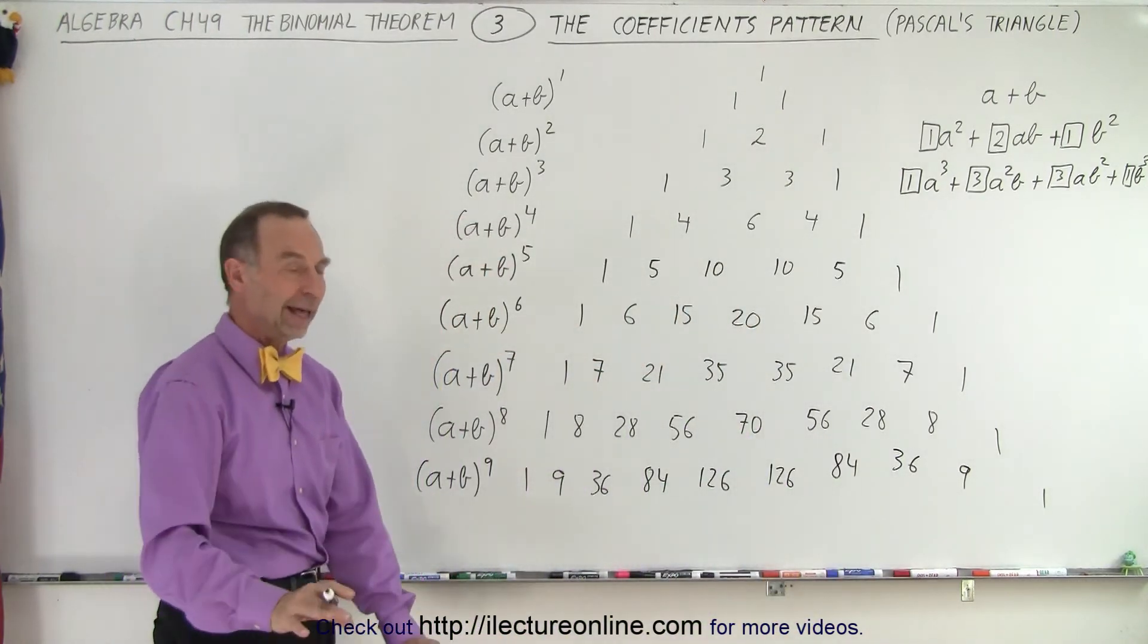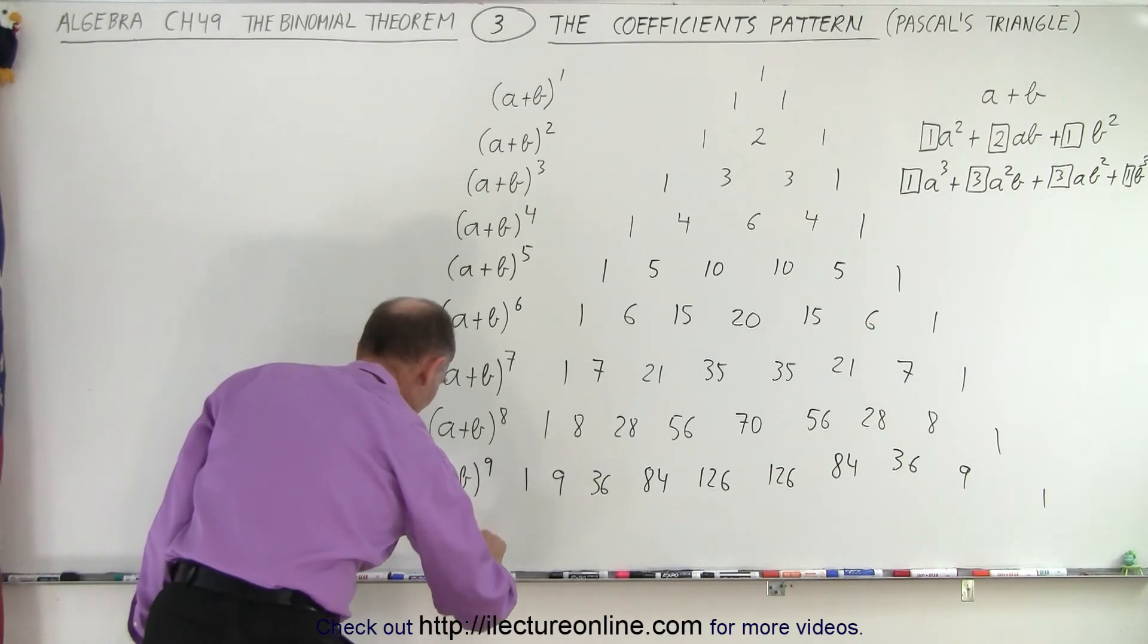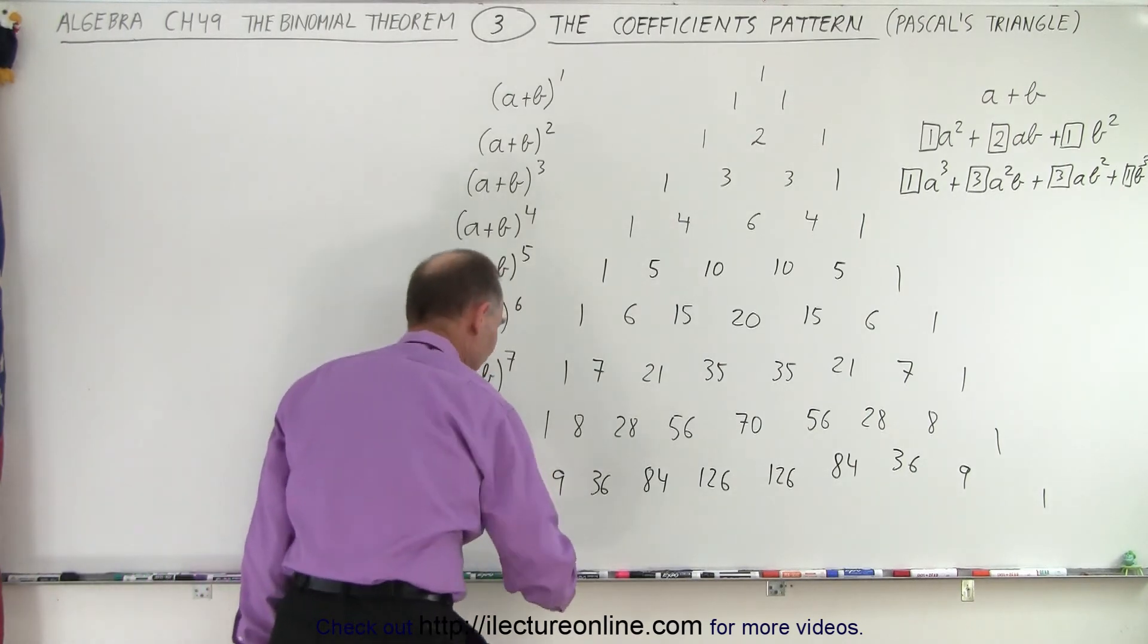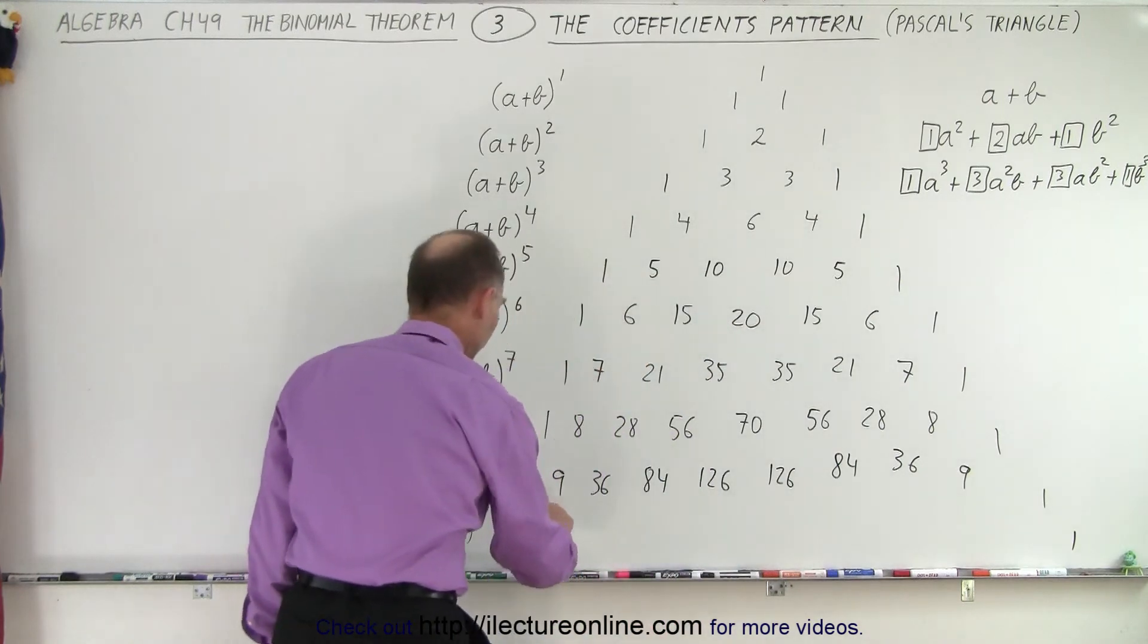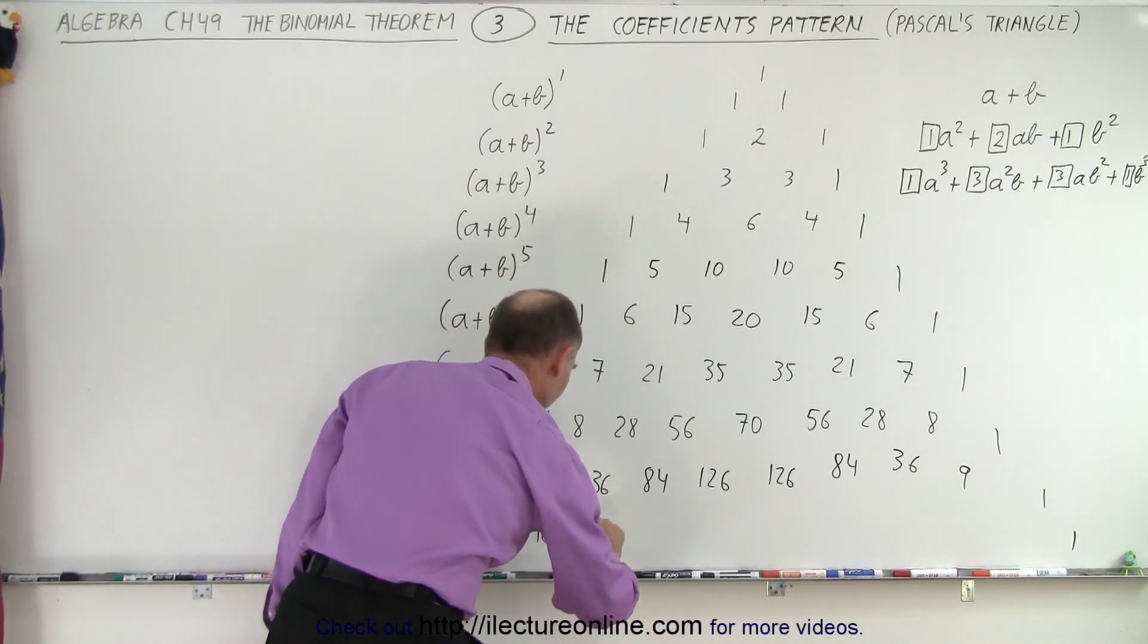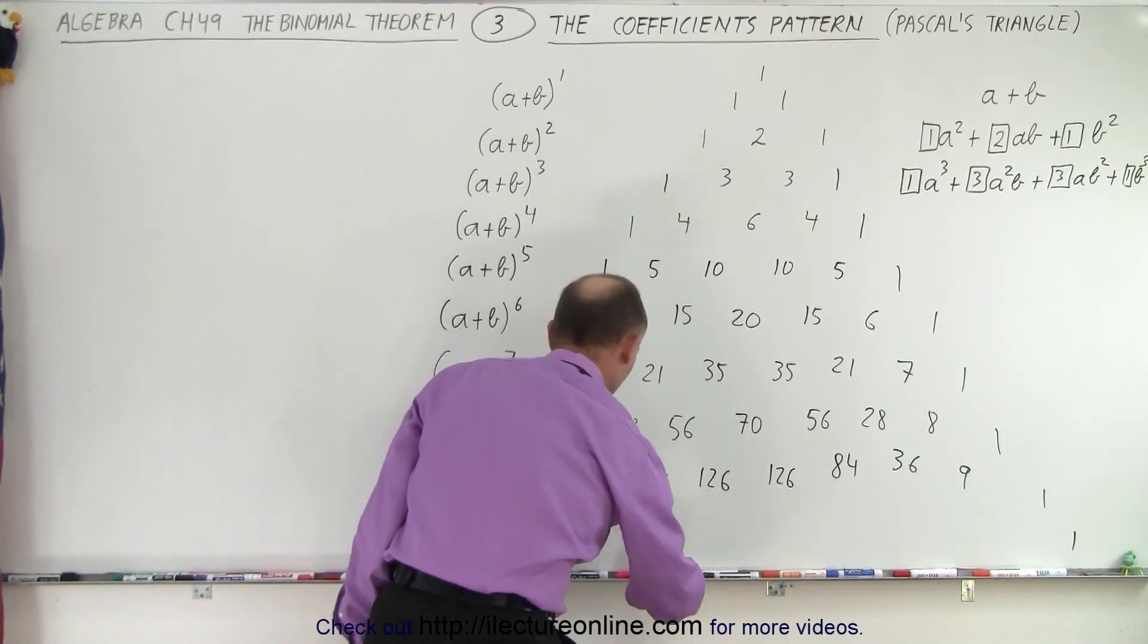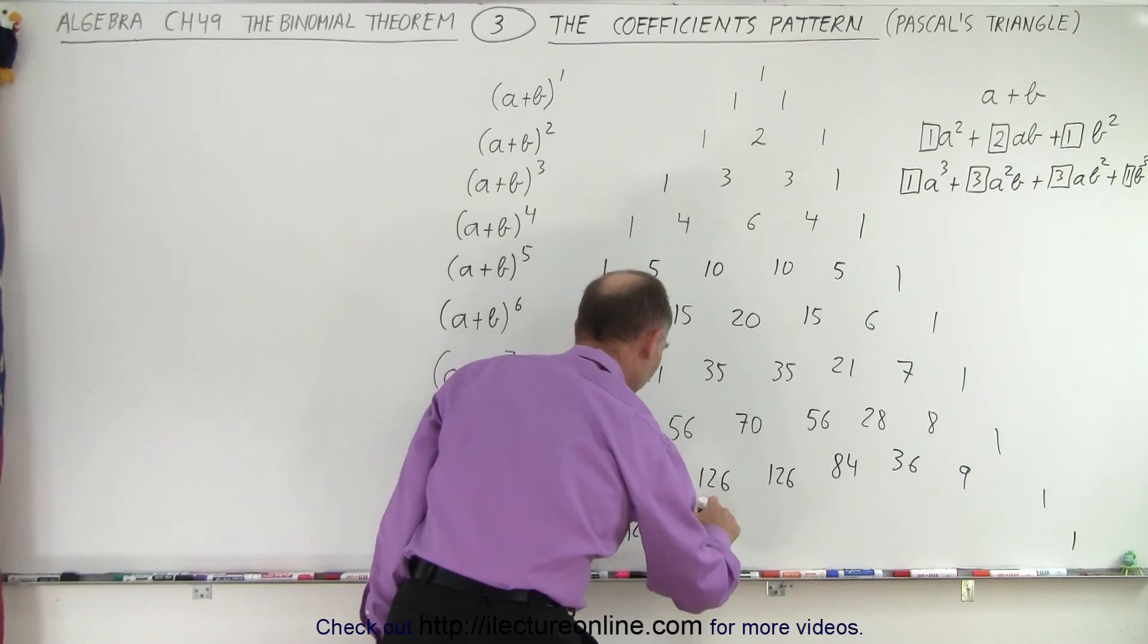And just to round it off, let's do one last one. Got room for one more. How about a plus b to the tenth? Again, we move the ones out, give ourselves some more room. 1 plus 9 is 10. 9 plus 36, which is 45. 36 plus 84, that's 120. 84 plus 126, that would be 210.